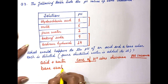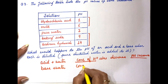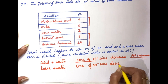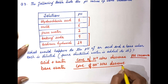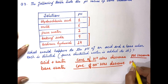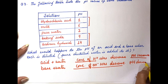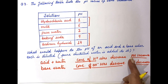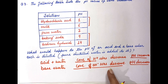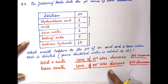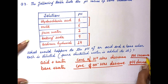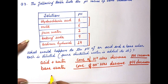Base जो है, इसमें जब हम water add करेंगे, तो concentration of OH⁻ ions decrease कर जाती है. अगर concentration of OH⁻ ions decrease करती है, तो pH value भी decrease करती है — means substance हमारा कम basic होता जाएगा. अगर pH increase करेगी तो substance कम acidic होगा, और अगर OH⁻ ion concentration decrease करती है तो substance कम basic होगा.